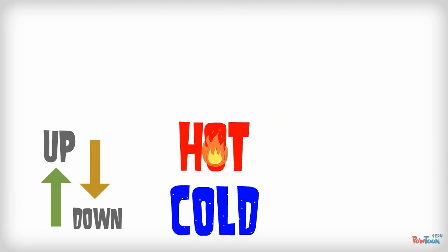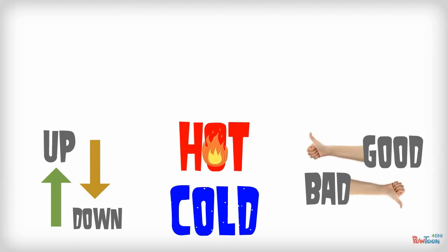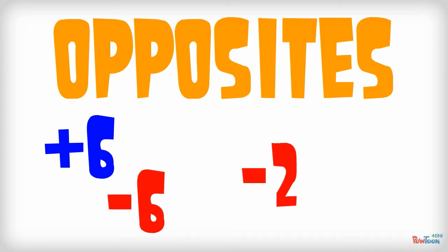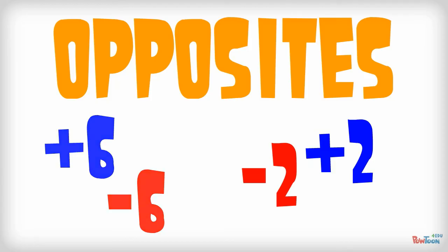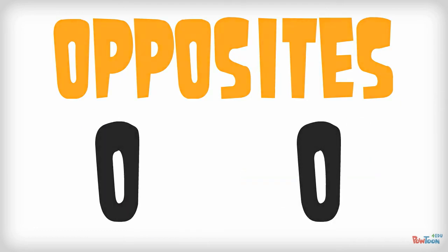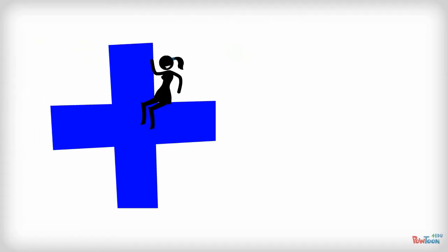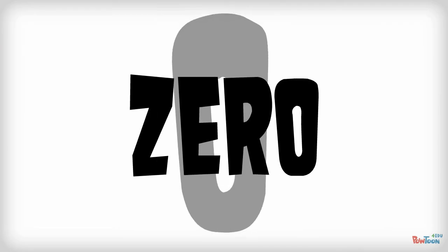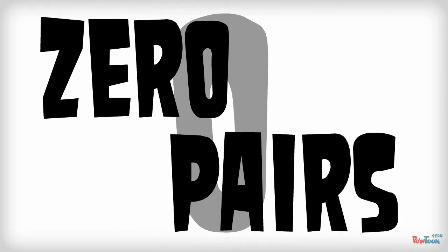So what about getting the answer to the original problem? For this, we need to understand the concept of opposites. Positive 6 and negative 6 are considered opposites. Negative 2 and positive 2 are opposites. Any time you combine opposites, they cancel each other out and equal 0. This same rule applies to our tiles. Any time you have a positive tile and a negative tile together, they cancel each other out to make 0. We call these zero pairs.